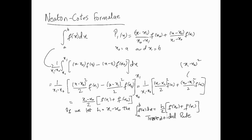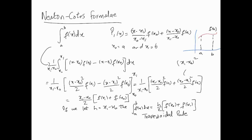We don't have to stop here — we can use a second-order polynomial. Just graphically, for completion: here is f(x) with limits a and b, where a = x0 and b = x1. What we are doing is using a linear approximation of the function between these two points, interpolating with a linear interpolant.